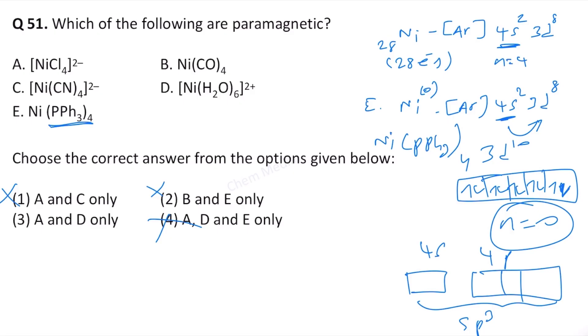Therefore the correct option is option 3 — only complexes A and D are paramagnetic.